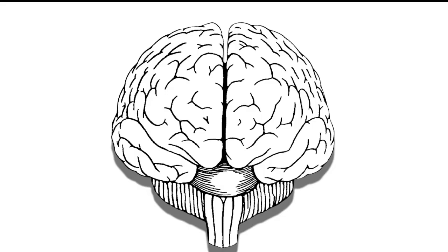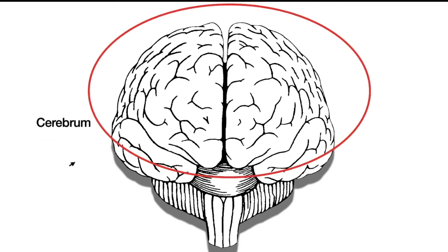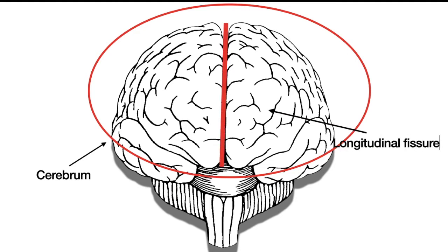So this is the brain. The brain has this big part called the cerebrum — it's this wrinkled part over here. The cerebrum can be divided into two hemispheres, separated by what we call the longitudinal fissure: the left hemisphere and the right hemisphere.